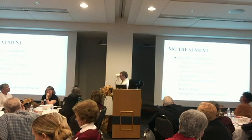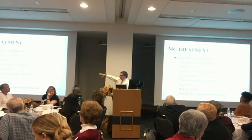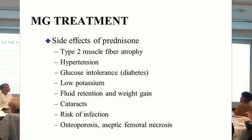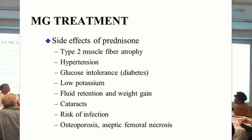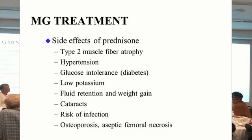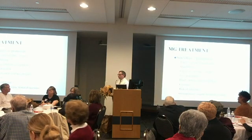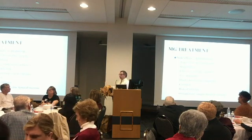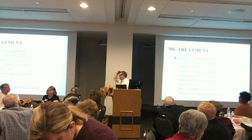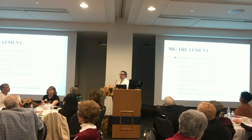Despite all the bad side effects of prednisone, let me say this: prednisone is the most effective drug for myasthenia gravis. Despite all these other new drugs we're going to talk about, prednisone actually works the best. A lot of times patients are reluctant to go on prednisone because they've had the side effects or know someone who has, and that's a tough decision, but prednisone really does work the best.